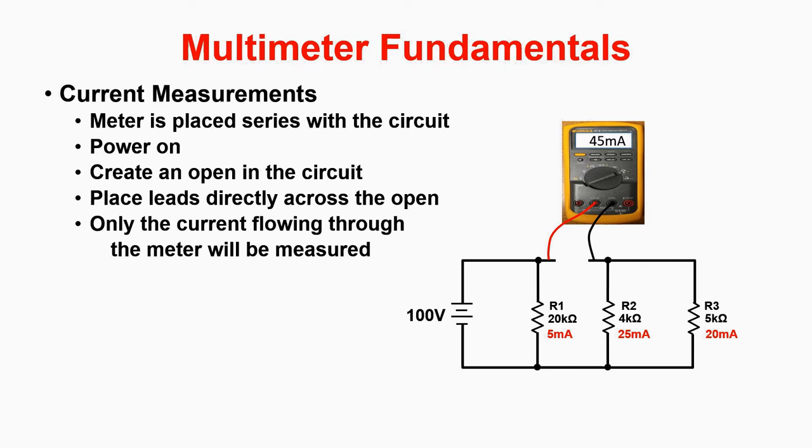In the illustration, you can see that the meter is only measuring what is going through the meter. R2 and R3 both flow through the meter, whereas R1 flows to the positive terminal of the battery. Only R2 and R3 go directly through the meter.